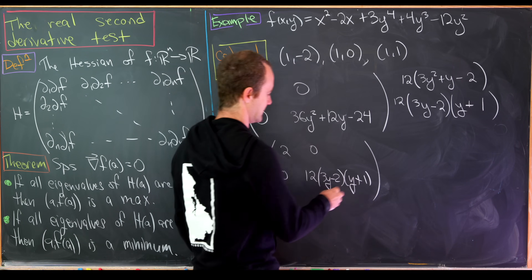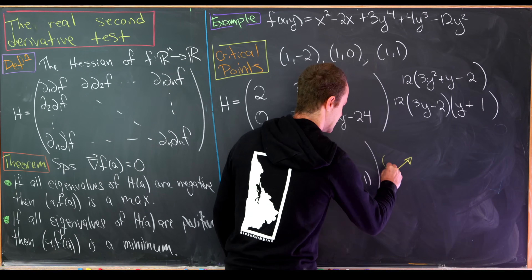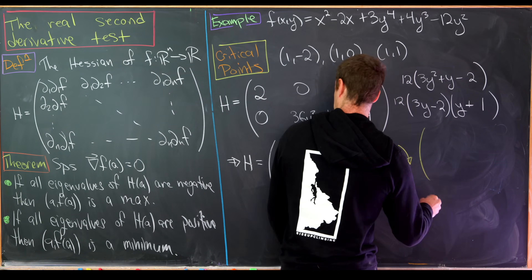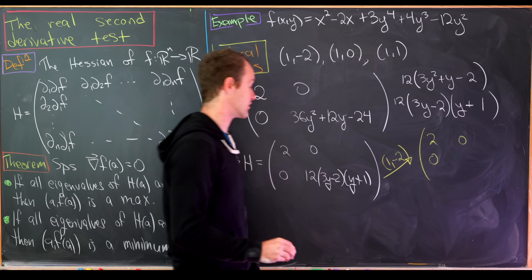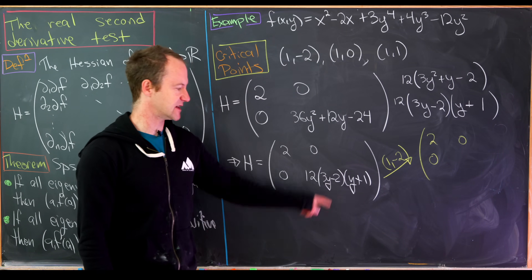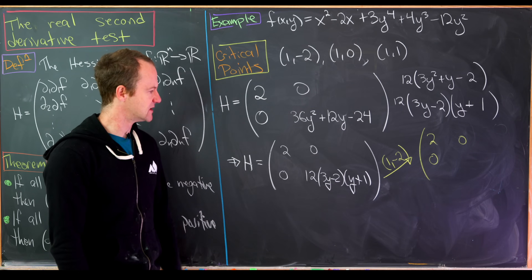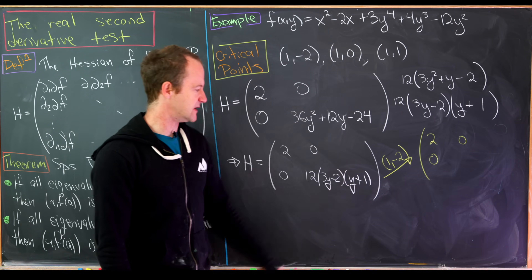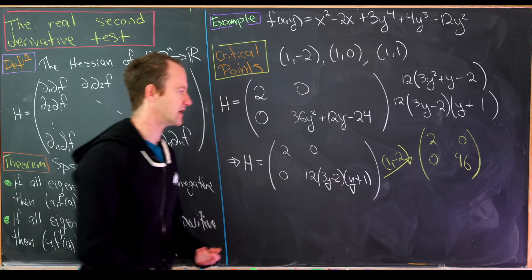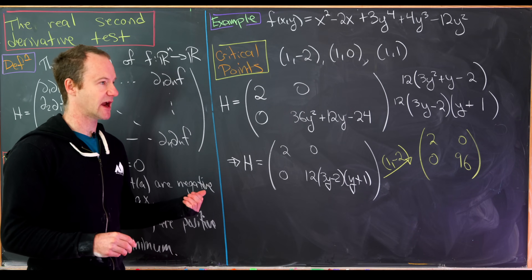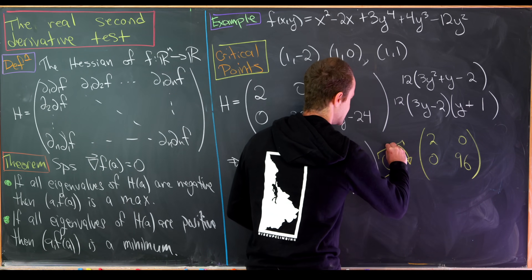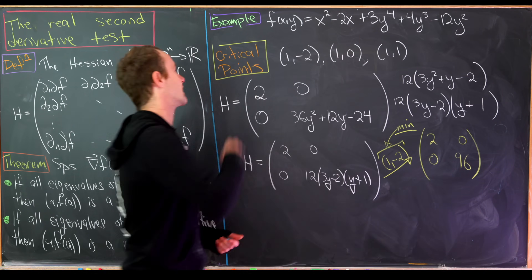Evaluating at the critical point (1, −2): the matrix is diag(2, 96). Plugging y = −2 into 12(3(−2) − 2)((−2) + 1) = 12(−8)(−1) = 96. Both eigenvalues 2 and 96 are positive, so by our theorem this critical point gives a local minimum.